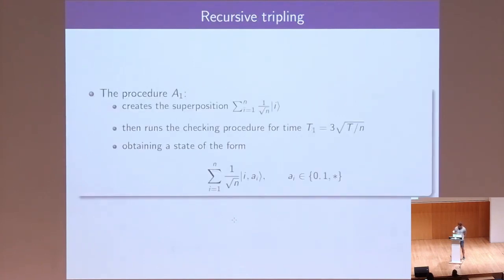And the first checking procedure, the first procedure we define is such that we create this superposition over all the indices. We run the checking procedure for the first time step. And that results in this kind of state, where the second register is either the answer or an indicator that more time is necessary for the ice item.